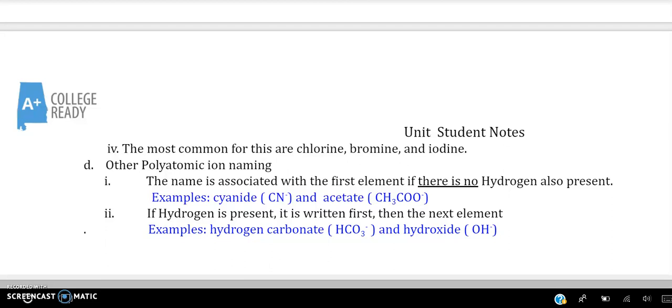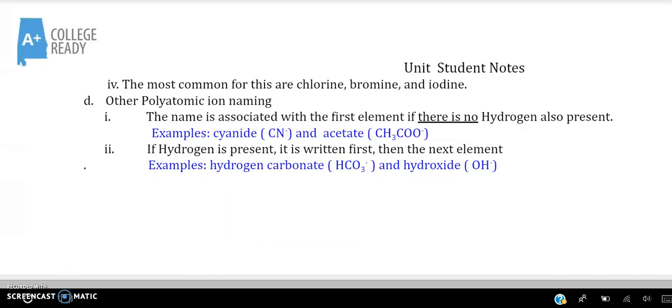Last we see that there is the name that is associated with the first element, and there's no hydrogen present. These are kind of like some odd balls. We have cyanide, which is CN-1, and acetate. Now acetate, we call it a 2, CH3COO negative, or it can be written as C2H3O2. And last but not least, if a hydrogen is present, the name of the hydrogen and then the next element. So hydrogen carbonate is HCO3, which usually you'll see it bonded to sodium. And that's where we get sodium hydrogen carbonate, or sodium bicarbonate, which is baking soda. And then if you notice hydroxide. Hydroxide is usually the one that most students miss because they want to put the H first. But hydroxide is O, right? It's OH, negative.